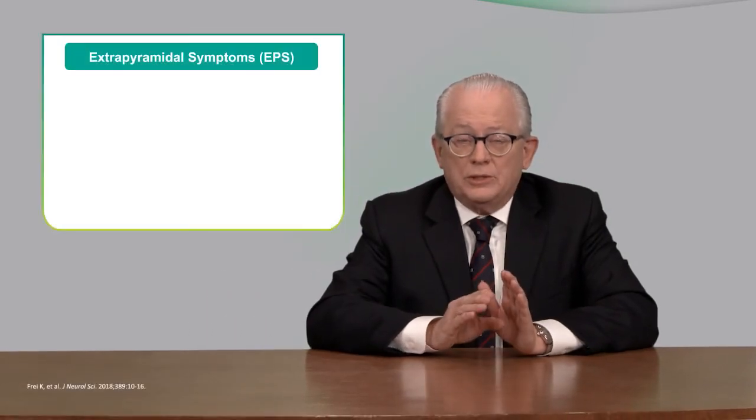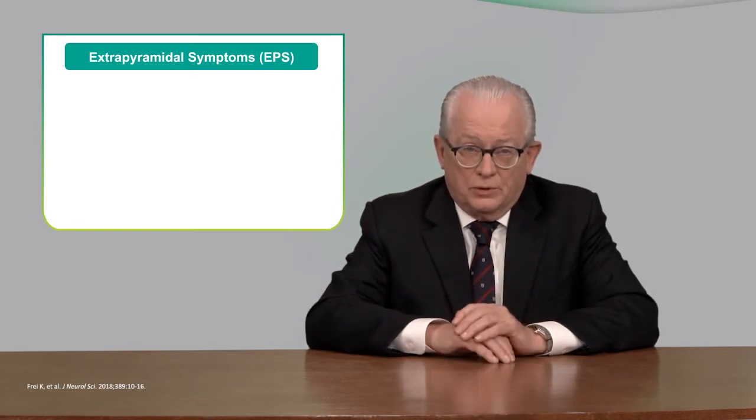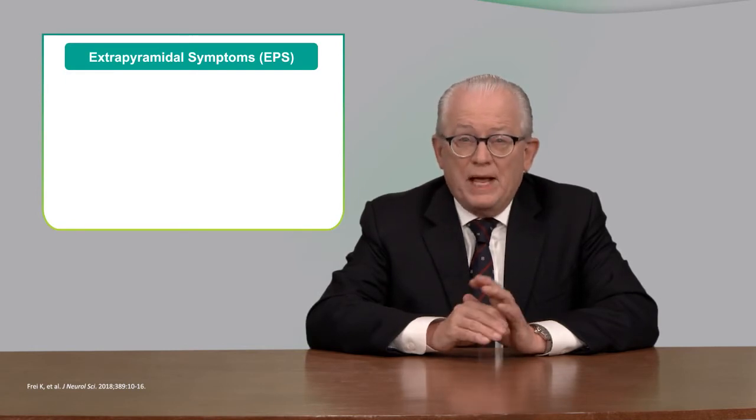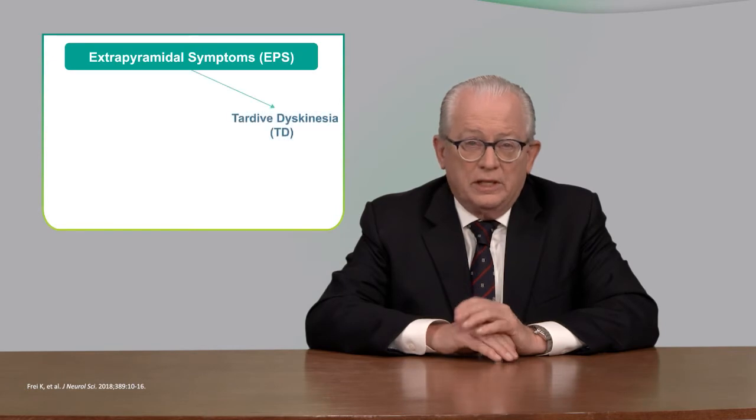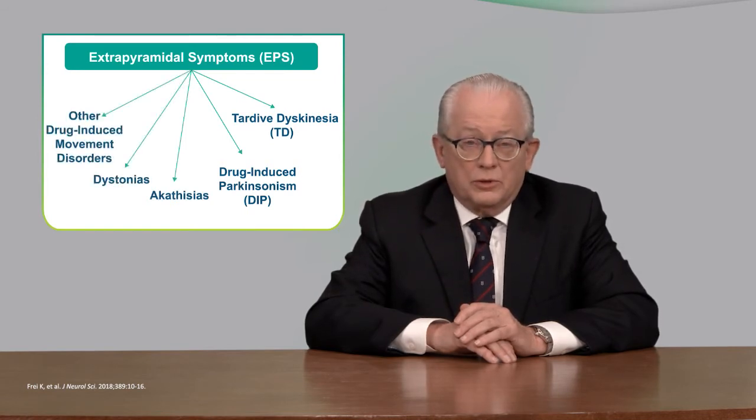With an increasing number of second-generation antipsychotics being studied, approved, and made available to treat a broad spectrum of disorders, including schizophrenia, bipolar disorder, and major depressive disorder, or MDD, the task of identifying and differentiating specific side effects has become increasingly complicated. Part of this complexity stems from terminology we use in psychiatry. The term EPS, or extrapyramidal symptoms, has been used to refer to multiple antipsychotic-induced movement disorders, including TD, drug-induced Parkinsonism, or DIP, akathisia, dystonia, and other drug-induced movement disorders.